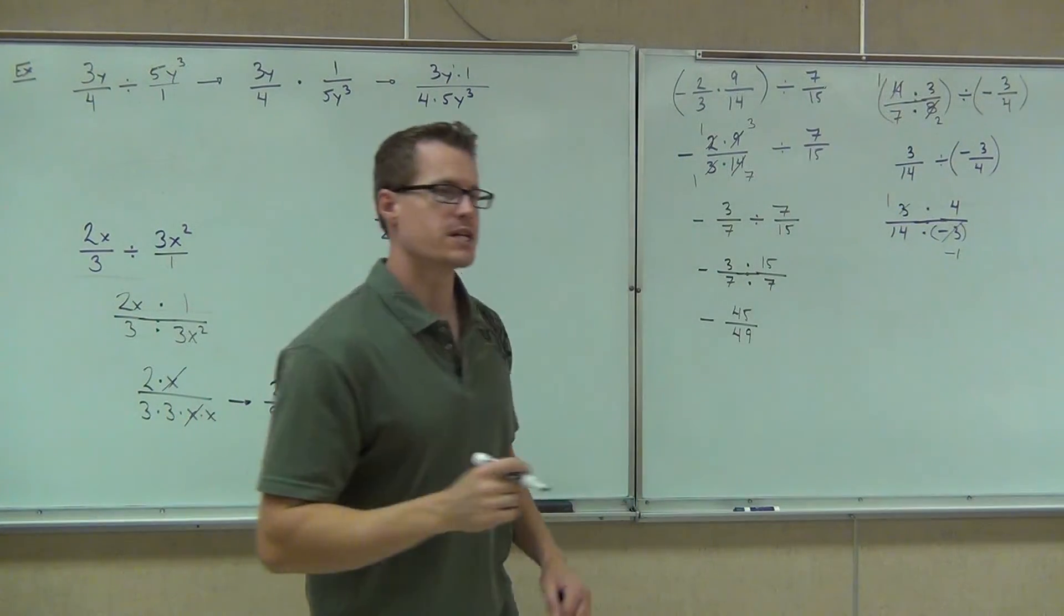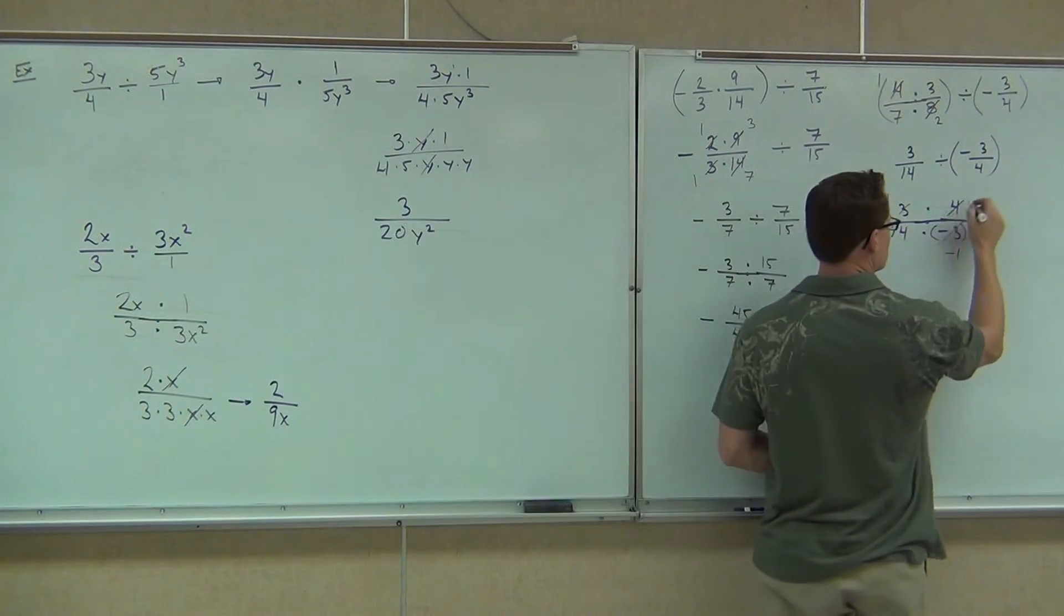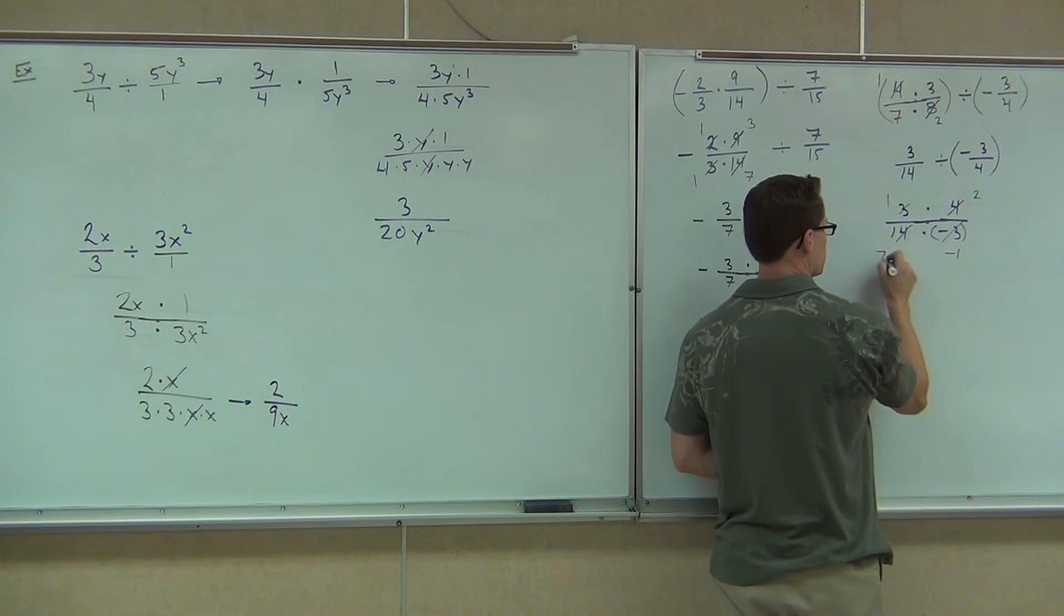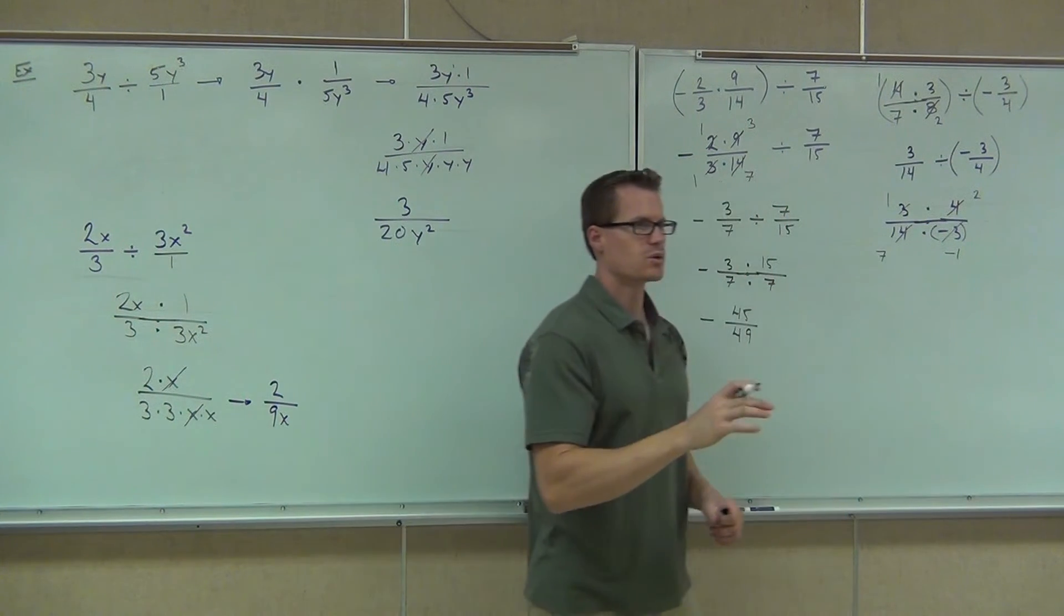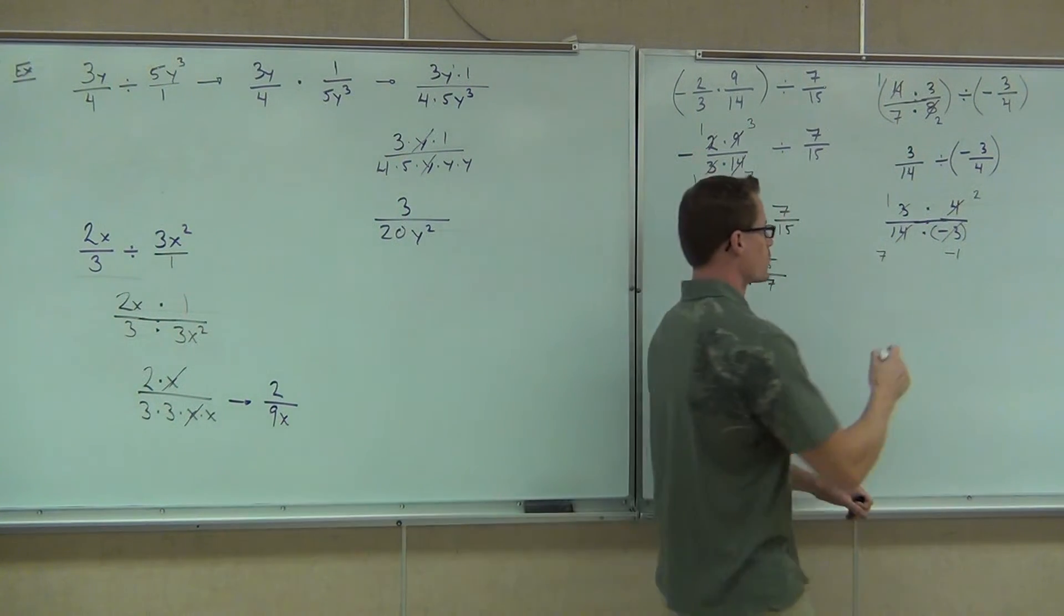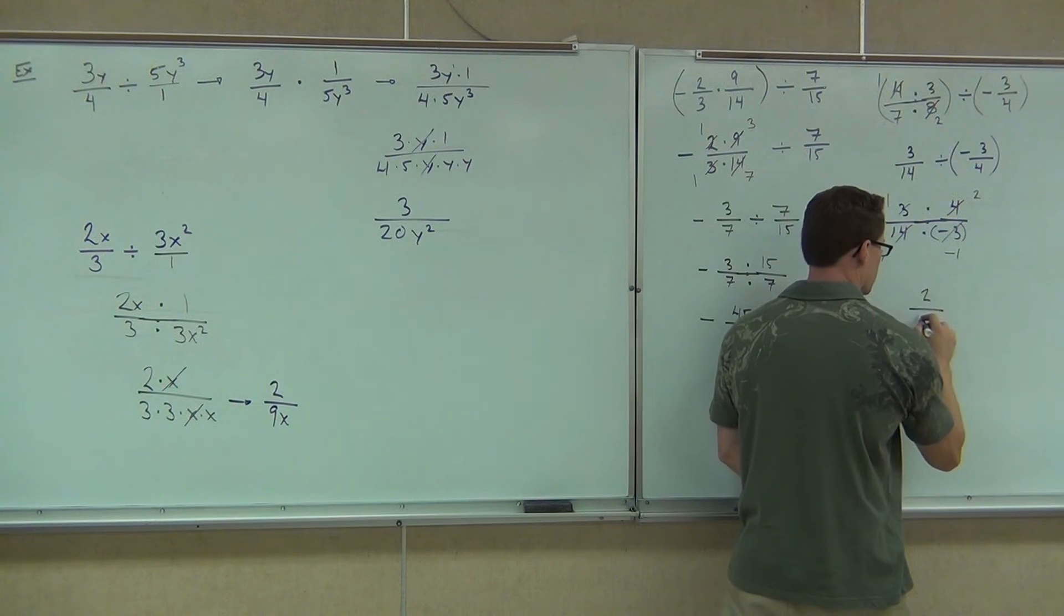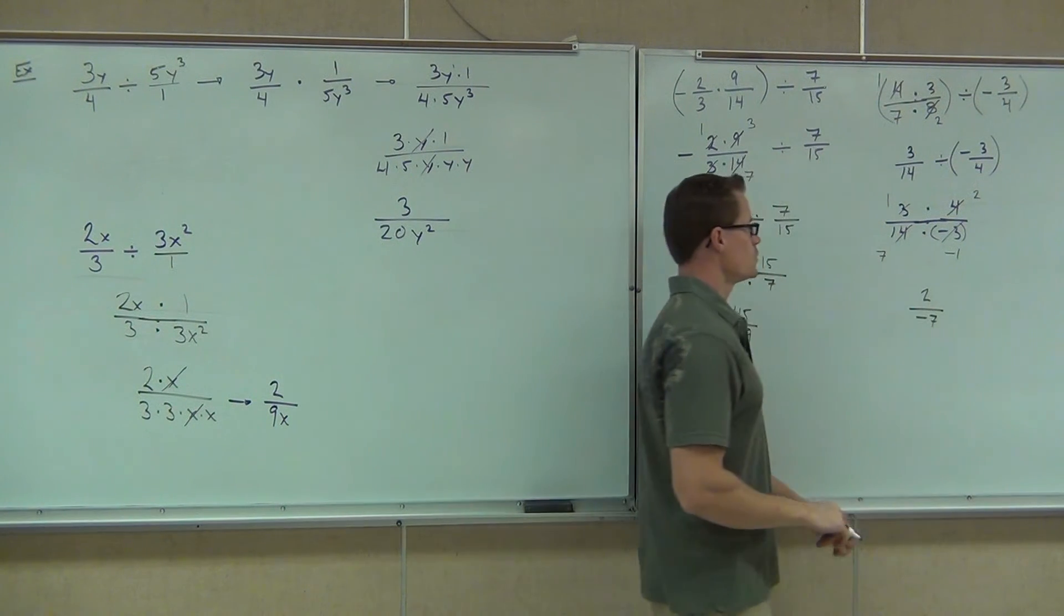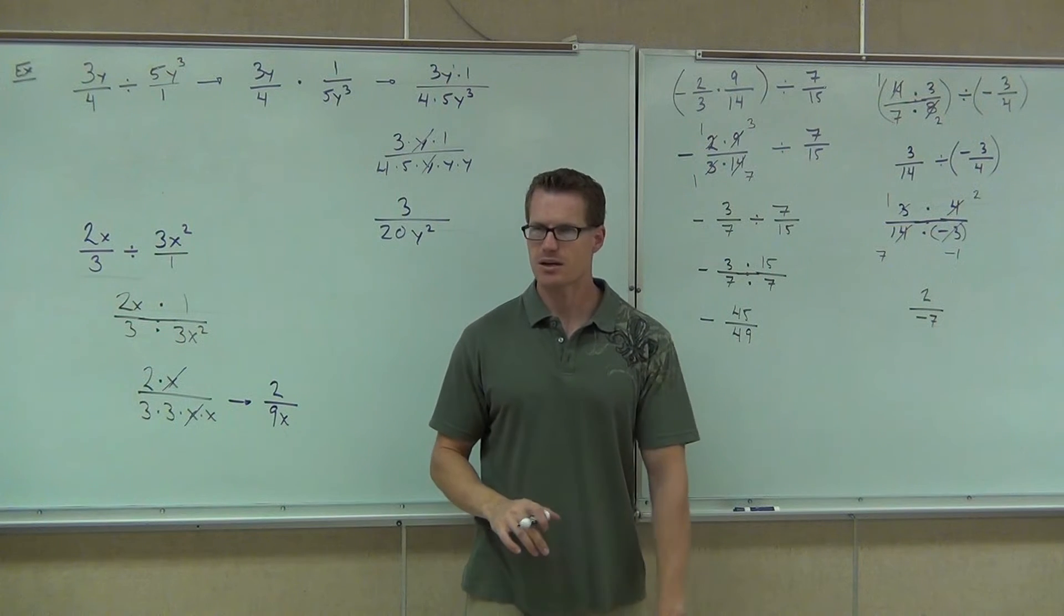Lastly, we've got four and fourteen. I know those share a factor of two. So we're dividing four by two. We're dividing fourteen by two. We're going to have two over negative. I got two over negative seven. Is that correct? Yeah.